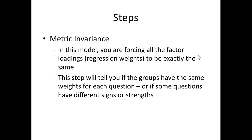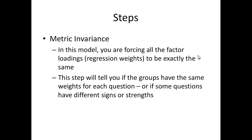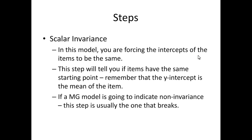If the metric model is okay, you then get more restrictive. What we're doing between each model is adding constraints — not turning them off and on. So the configural model: everything can do whatever it wants as long as they're in the same structure. Metric adds the same loadings. The next model — scalar — adds the same intercepts. So it's the same structure, same loadings, and same intercepts. We're adding constraints as we go, from least restrictive to most restrictive.